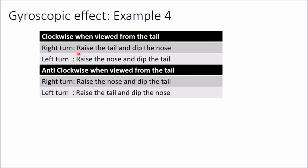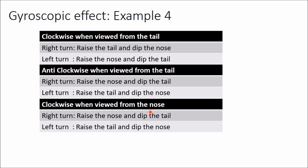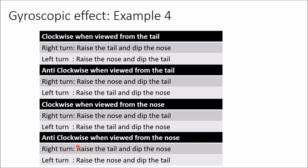Anticlockwise when viewed from the tail is opposite to clockwise from the tail: so for a right turn it will raise the nose and dip the tail, and for a left turn it will raise the tail and dip the nose. Note that clockwise when viewed from the nose is the same as anticlockwise when viewed from the tail — both meanings are the same. Similarly, anticlockwise when viewed from the nose equals clockwise when viewed from the tail. In this way, if you memorize only one condition you can generate all the others.